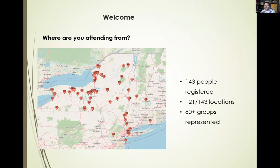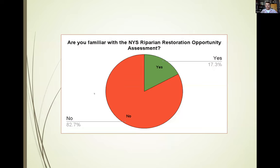As of a couple days ago, we had 143 people registered and it seemed like the information on this webinar had a pretty good spread. We had a couple of people registered from as far as New Jersey, Vermont, and Massachusetts, and all over New York State — Adirondacks, downstate, all the way over to Buffalo. Over 80 different groups and organizations were represented in the registry, and 121 different people gave their locations.